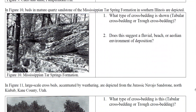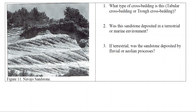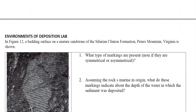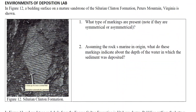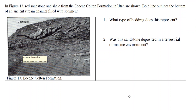Moving along, there's some cross bedding — determine whether it's tabular planar or trough cross bedding, and based on where these form, suggest what this environment was in the past. The next image looks more like tabular cross bedding. There's also a famous cross-bedded sandstone here, plus a ripple to identify. Then there's a channel fill, which suggests some sort of fluvial environment — think about what's going on with that one.